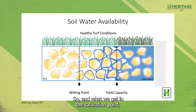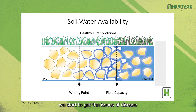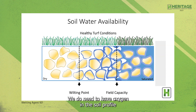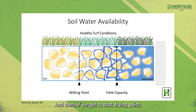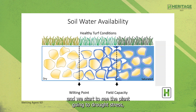At the saturation point, we start to get disease issues and other problems with our turf grass. We need oxygen in the soil profile to help with the root system and maintain good, healthy roots. If we get to the drying point, we start to have desiccation, drought stress, and our turf grass stands begin to brown out and go dormant.